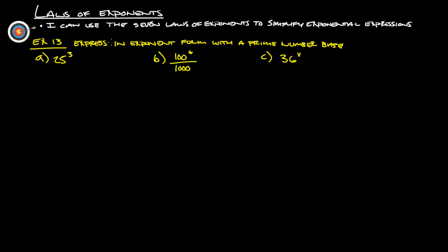Example 13: express in exponent form with a prime number base. So basically we want to turn that into some kind of prime number. 25 is the same thing as 5 squared, all to the third power. 2 times 3 gives us 5 to the 6th power.